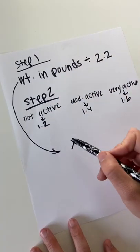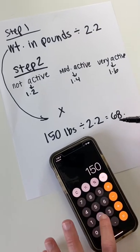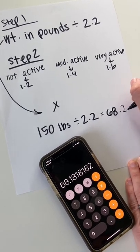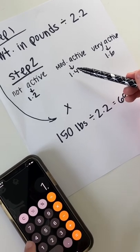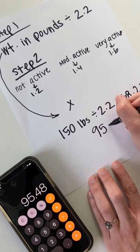Now take your weight in kilograms and multiply it by your activity level. So if you weigh 150 pounds, then your weight in kilograms is 68.2. And if you exercise about two times per week, you'll use 1.4. So multiply that, and your total grams of protein per day would be 95.